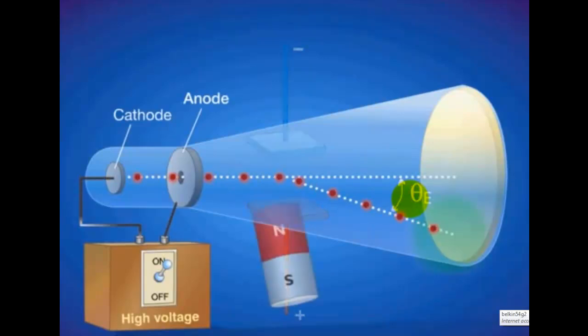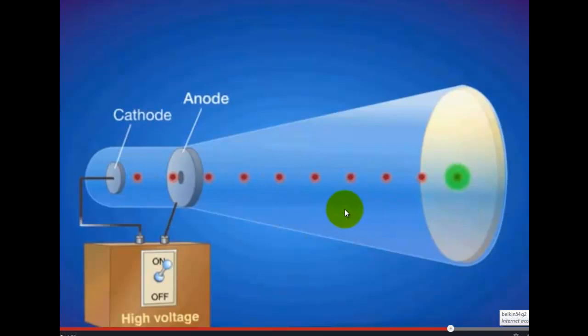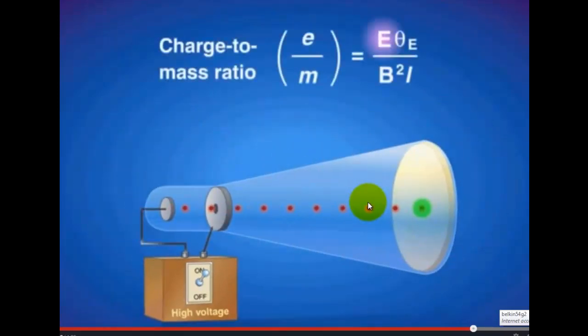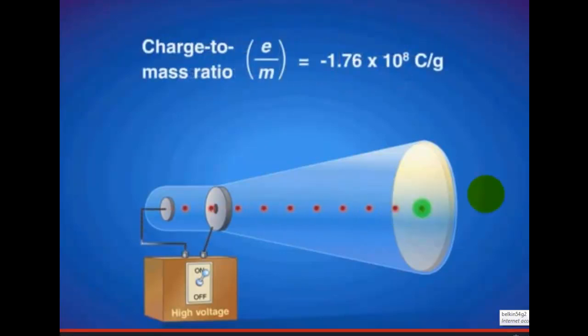By the amount that they are deflected, you're able to work out the mass to charge ratio. And this is quite important later when we look at spectroscopy and things like that. But all you need to know now is that he was able to establish this using this formula. It's able to tell us the size of these particles. And from that he was able to tell that the particles are very, very, very small.